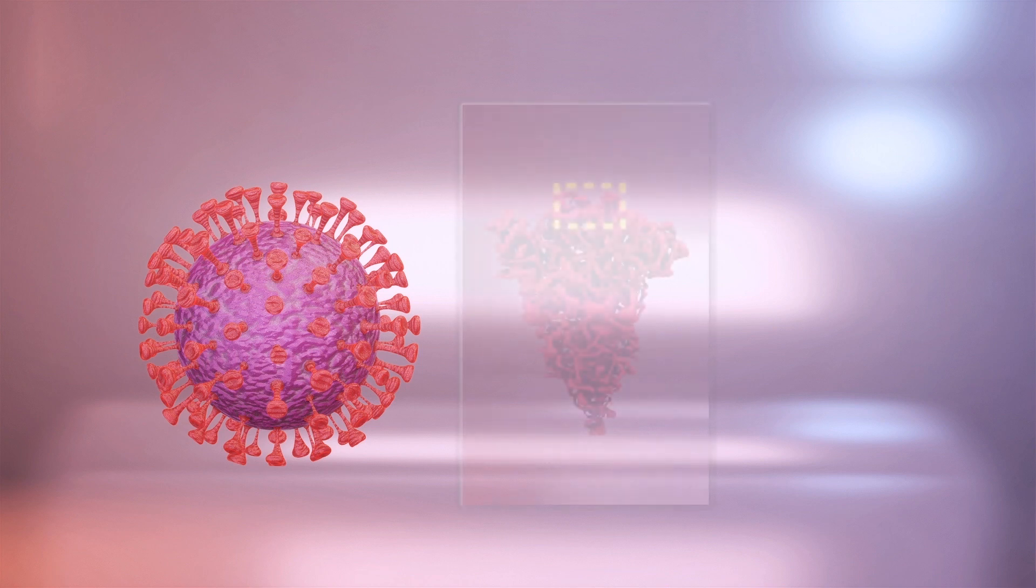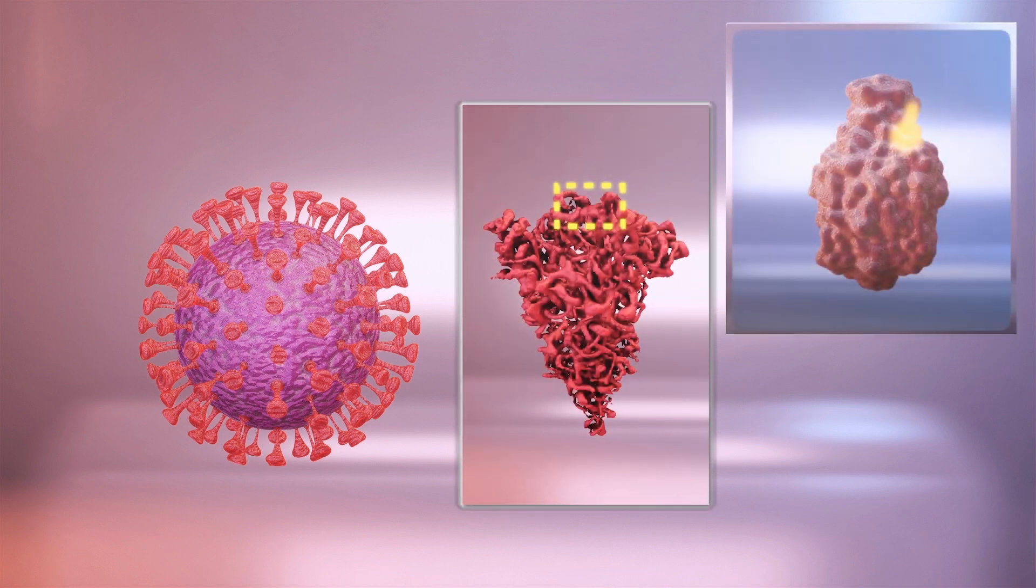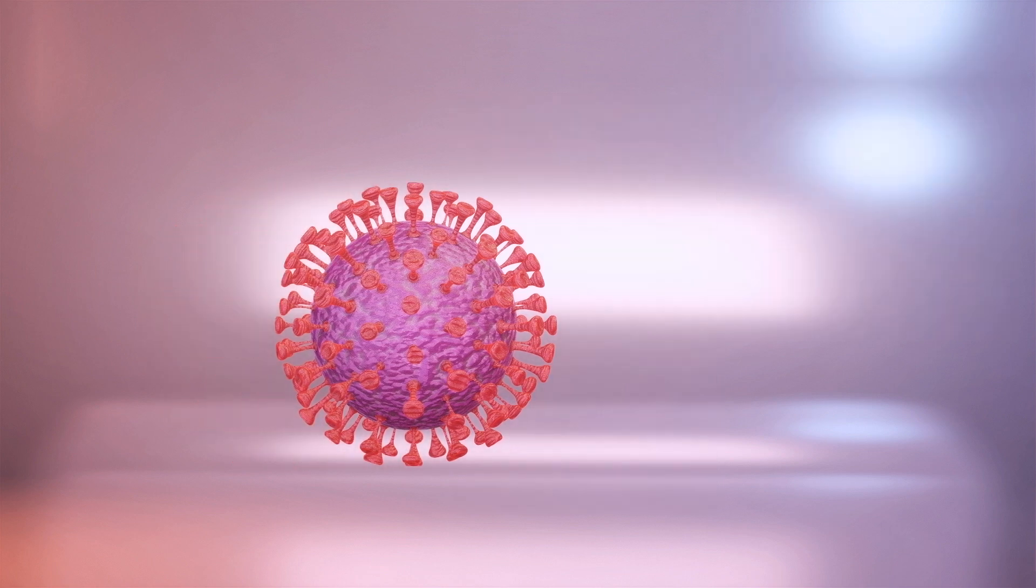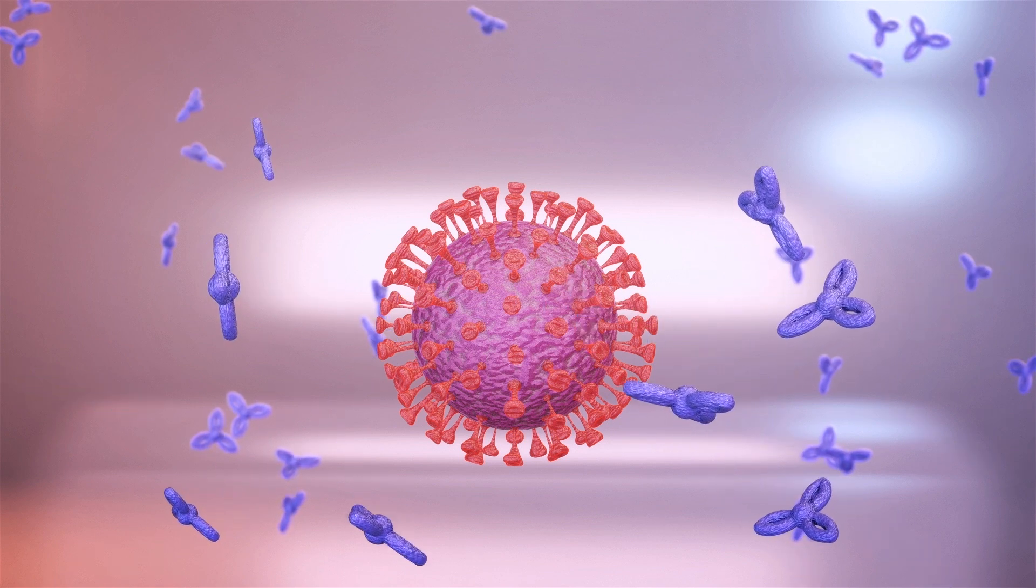The Indian variant also carries a second mutation on the spike protein called E484Q. According to Roberts at Queen's University, research suggests mutations that affect this area of the spike protein may make the virus less susceptible to pre-existing antibodies.